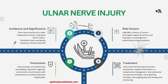To manage and prevent ulnar nerve injuries: regularly check for signs of nerve injury during and after surgery, as a detailed neurological exam post-surgery can help catch issues early. Proper positioning is crucial — keep the arm in a neutral position with adequate padding and regularly reposition the patient. Document any signs of injury and educate patients on symptoms to watch for. If needed, surgical interventions like neurorrhaphy or nerve transfers can help repair severe injuries. Physical therapy is essential for recovery, and collaboration with specialists helps refine techniques and positioning strategies.